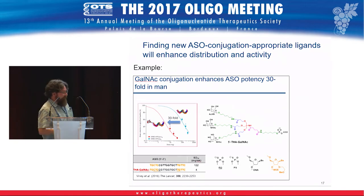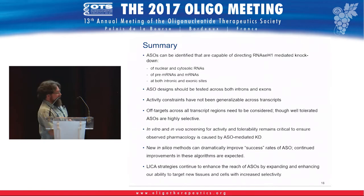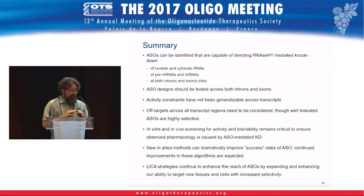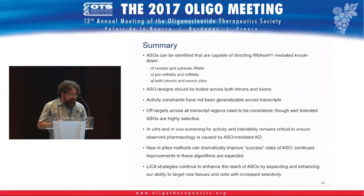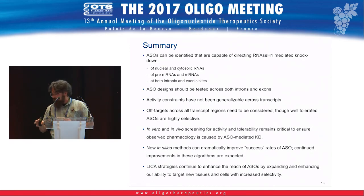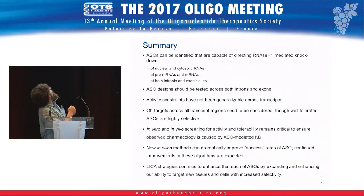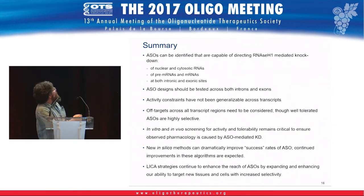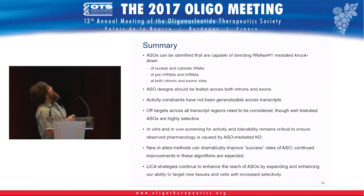To summarize: ASOs can be identified that knock down targets, they can be active in both nuclear and cytosolic compartments acting on pre-mRNAs and mRNAs, and we see activity across introns and exons. We're making steady progress making screening more efficient using in silico algorithms, and ligands like GalNAc will increase our ability to reach tissues that are difficult to access. With that, I thank everybody at IONIS who contributed to this work.